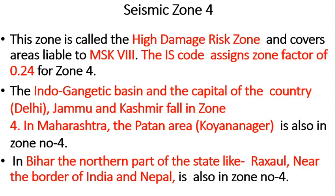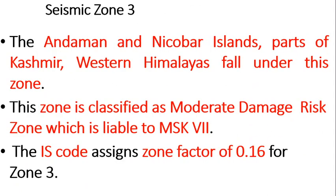Zone 4 is called the high damage risk zone, measured under MSK scale 8, with IS code assigning a factor of 0.24. The Indo-Gangetic Basin, Delhi, Jammu and Kashmir, Maharashtra, the Patan area, northern Bihar, and Ragshall near the India-Nepal border fall under zone 4. Zone 3 includes the Andaman and Nicobar Islands, parts of Kashmir, and the western Himalayas. This zone is classified as moderate damage risk, measured under MSK scale 7, with IS code assigning 0.16.